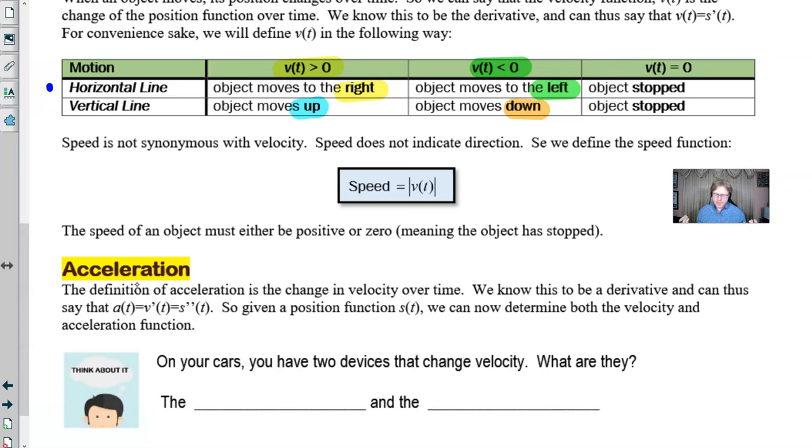If you want to think about this in a practical application, on your car you've got two devices that change the velocity. What are those two devices called? Think about that for a little bit. Maybe you said the gas pedal, which is perfectly okay, but we also call the gas pedal the accelerator. So that would be one of these answers. And it kind of makes sense - an accelerator is something that changes the velocity. So the change in velocity is acceleration. Now the other thing that changes the velocity is called the brake. I guess we wouldn't call it the decelerator, although it does have some connection.